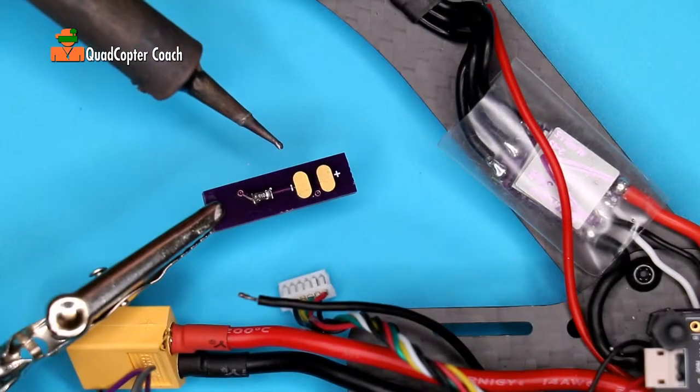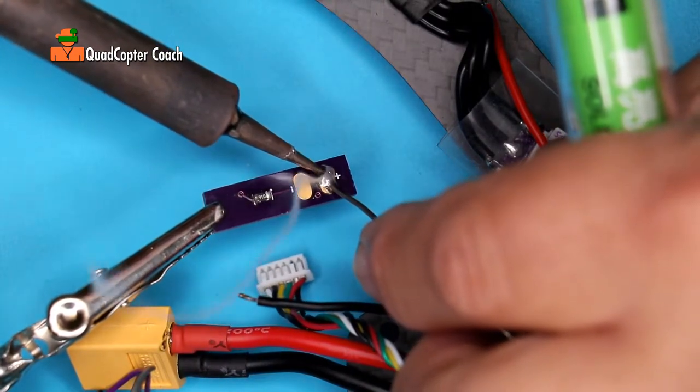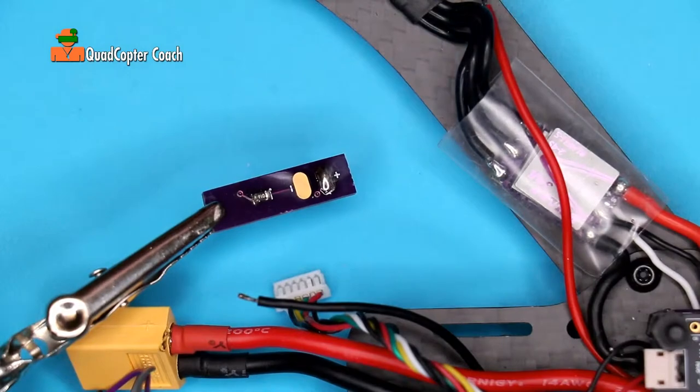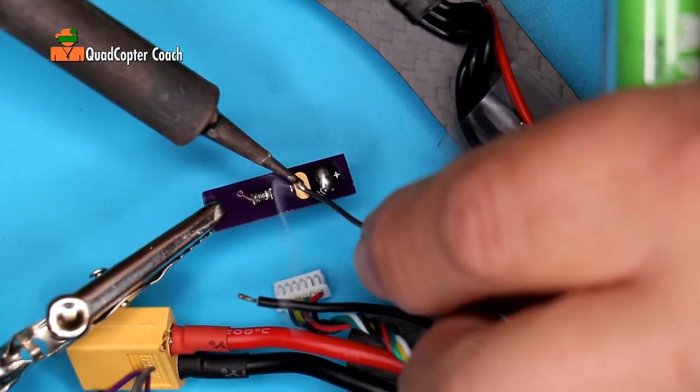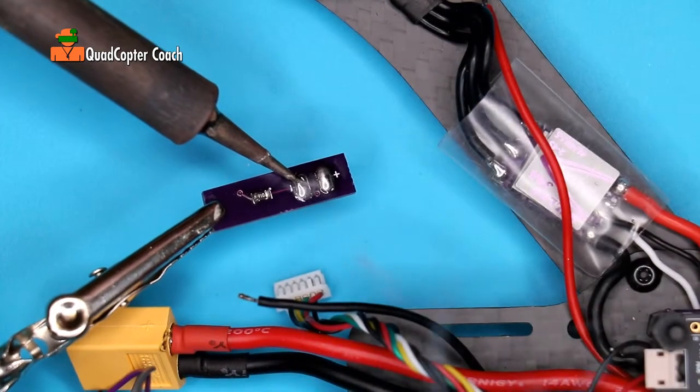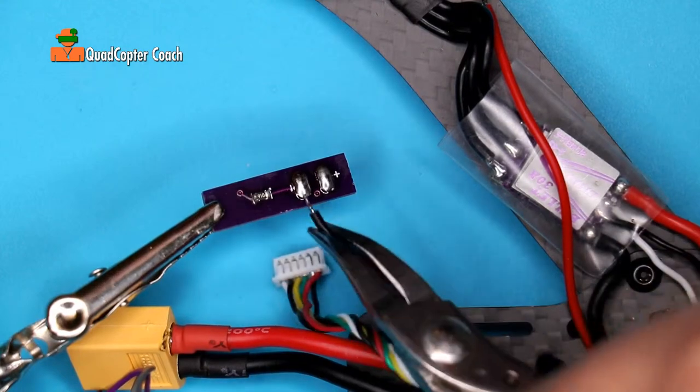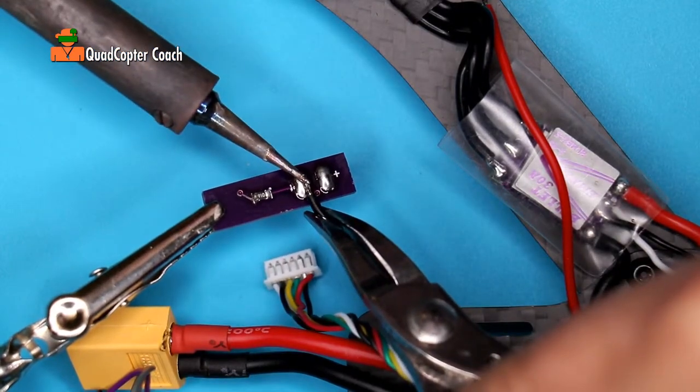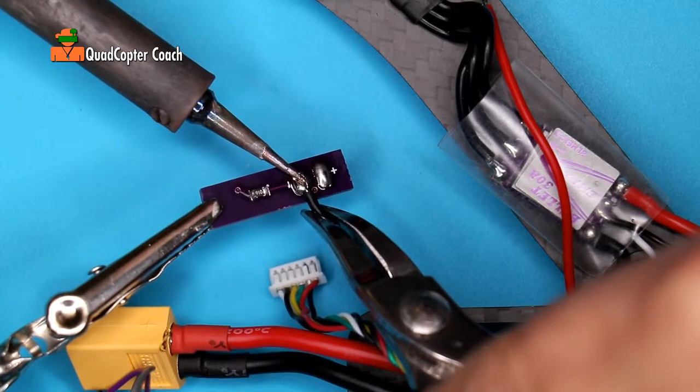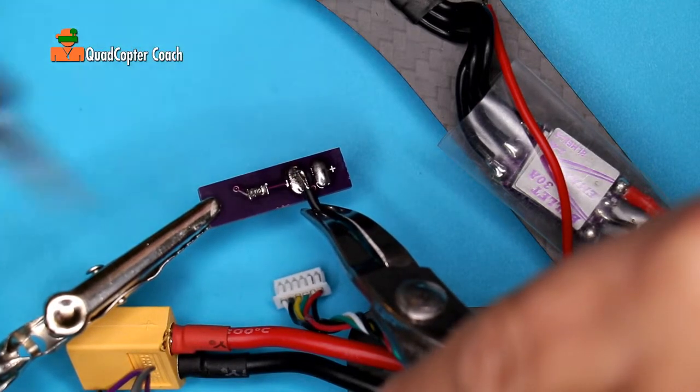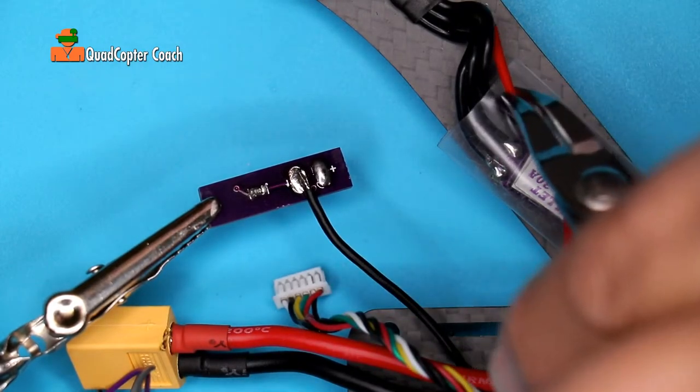We first tint our light board. I'm going to begin with the ground wire. A little heat. That's good.